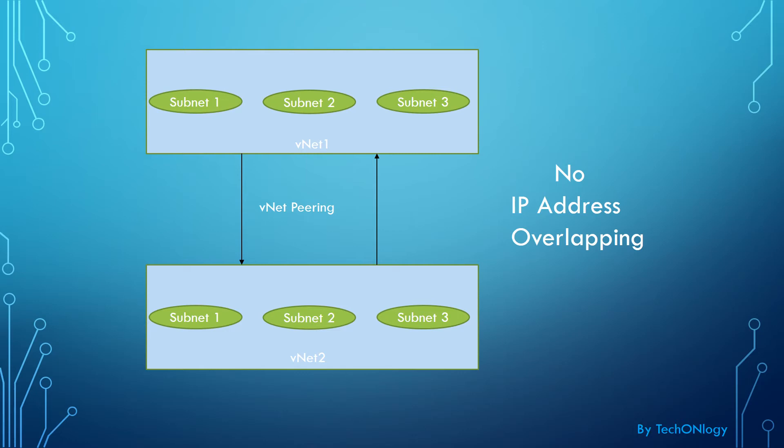There are two types of VNet peering. Local VNet peering is where VNet 1 and VNet 2 reside in the same Azure region. Global VNet peering is where VNet 1 and VNet 2 reside in different regions — for example, if VNet 1 is in East US and VNet 2 is in West US, that is global VNet peering. If both VNets are in East US, it is called local VNet peering.